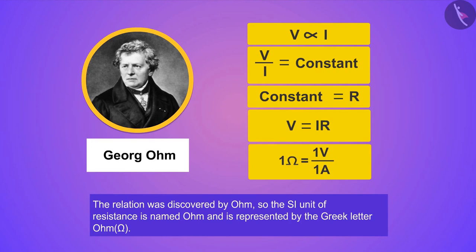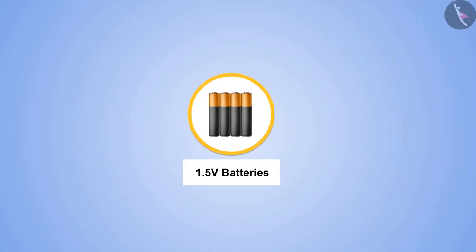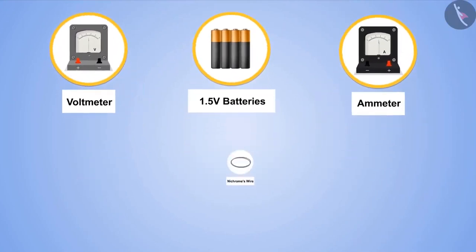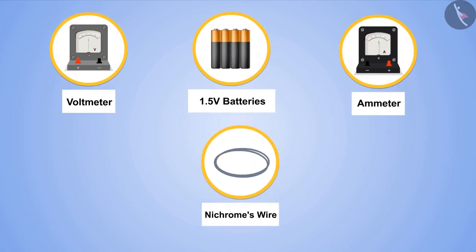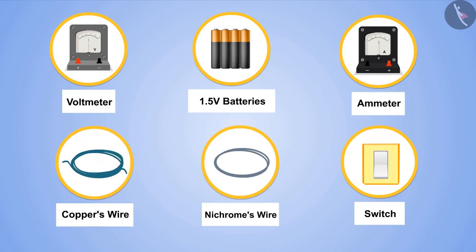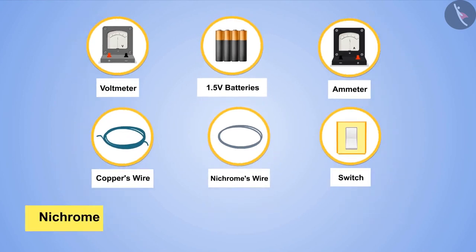Now let's perform an activity to prove Ohm's law. To perform this activity we need four 1.5 volt batteries and an ammeter, a voltmeter, and a half meter long nichrome wire that will act like a resistor here, and a switch and copper wires to connect the circuit. Nichrome is an alloy of Nickel, Chromium, Iron, and Manganese.